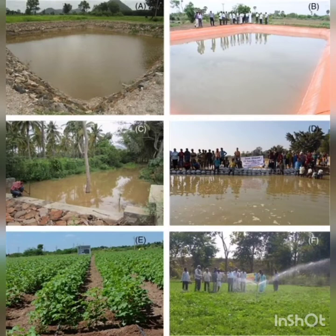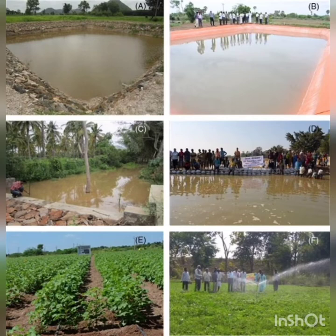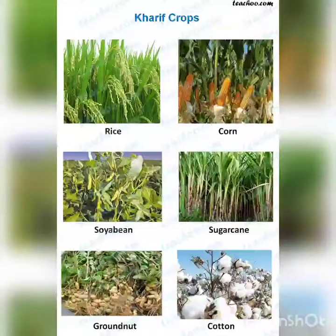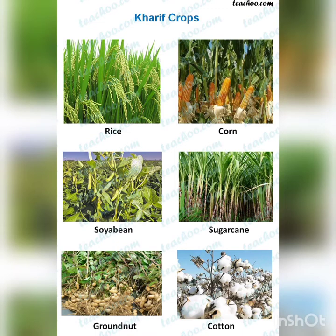In rainy season, ponds, wells, and ditches are filled with water, so farmers grow a variety of crops in the rainy season and they get harvested during the winter season. That is why a large number of fresh fruits and vegetables are available in winter season. The crops which are grown in the rainy season are termed as Kharif crops. In Arabic language, Kharif means rain. Crops like paddy, chili, sugarcane, cotton, moong, turmeric, and jowar are all grown in the rainy season and are Kharif crops.